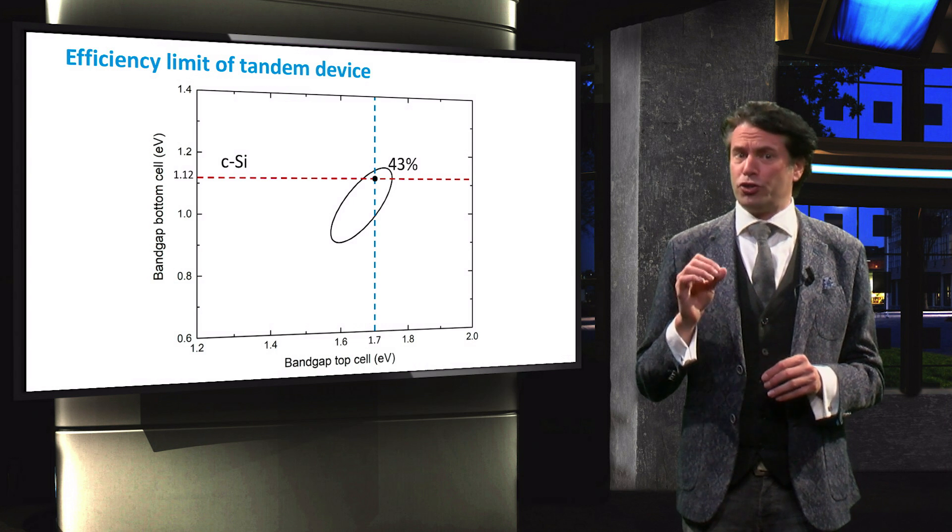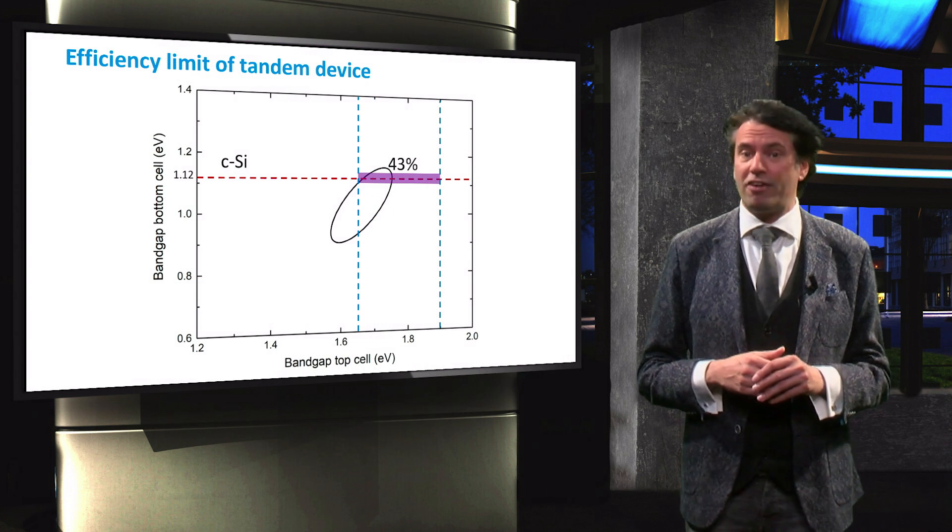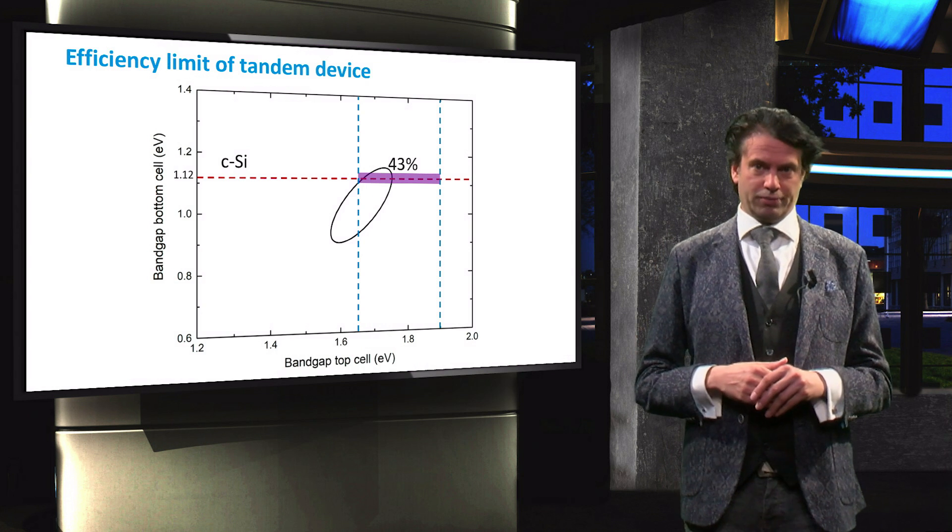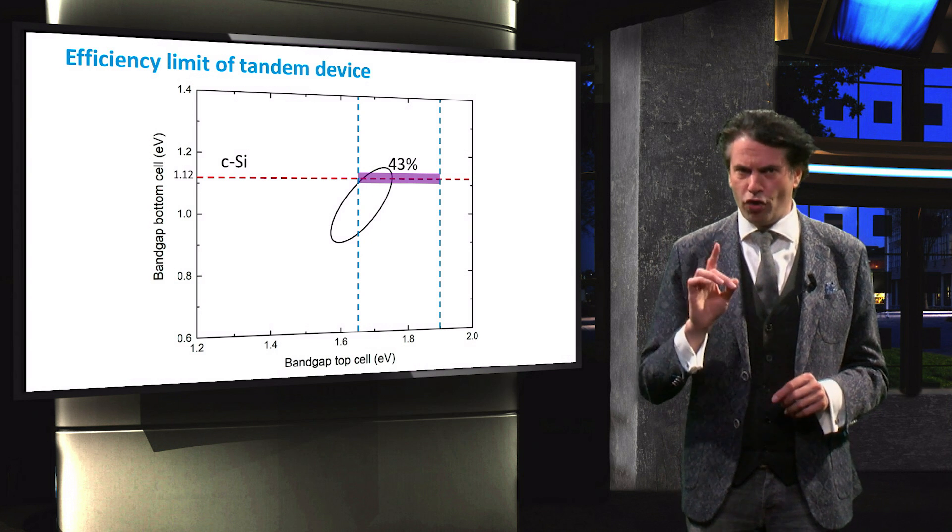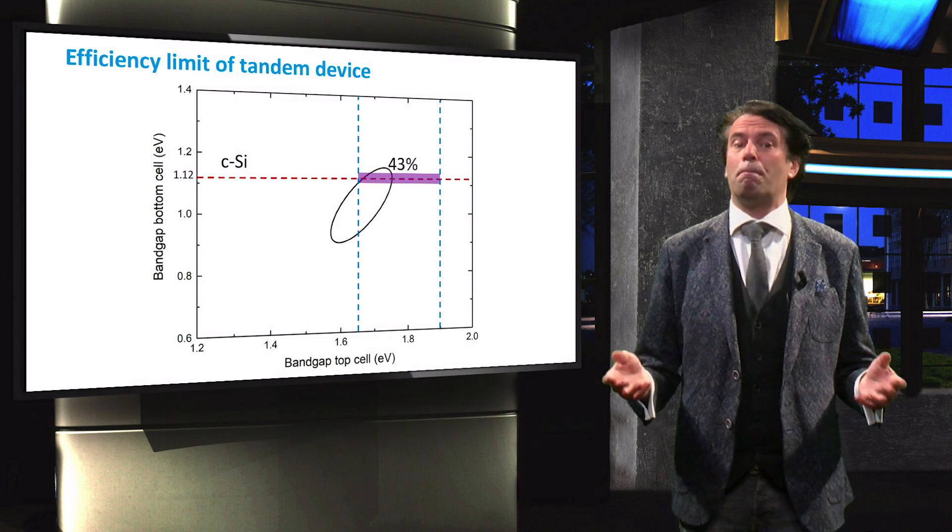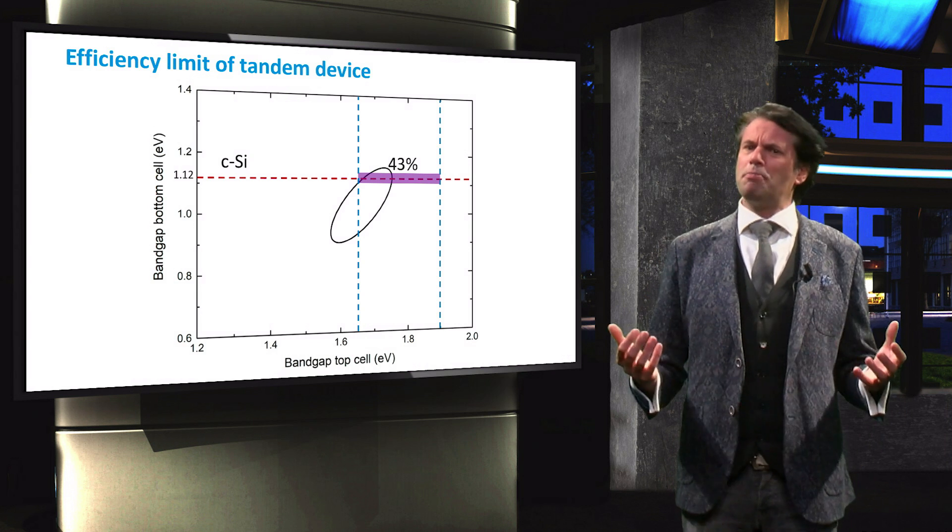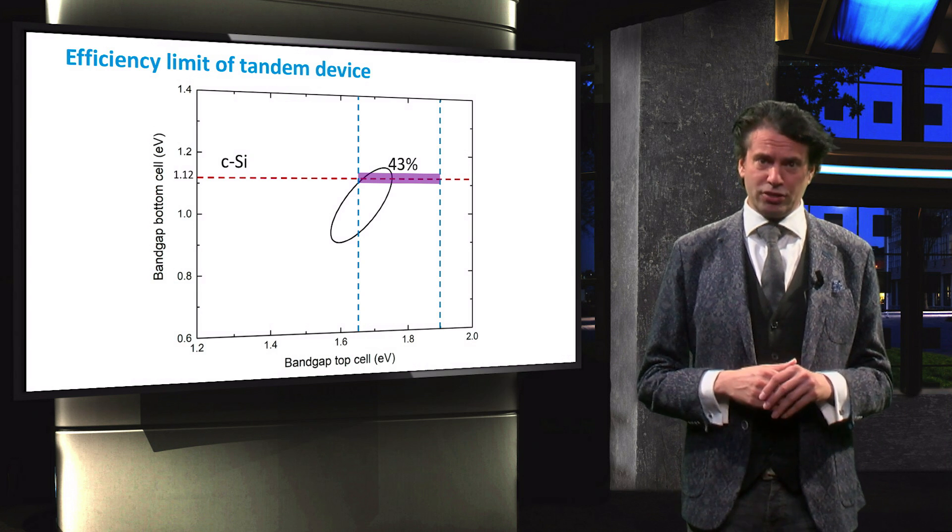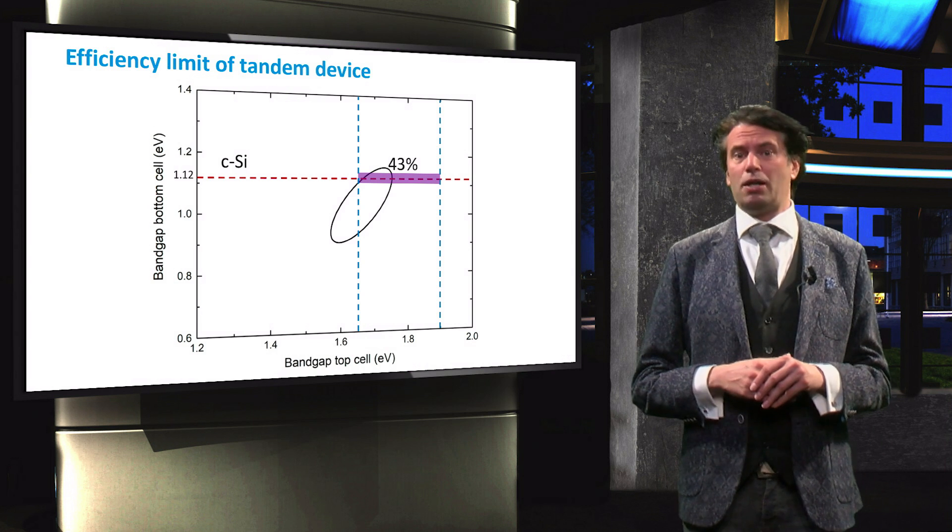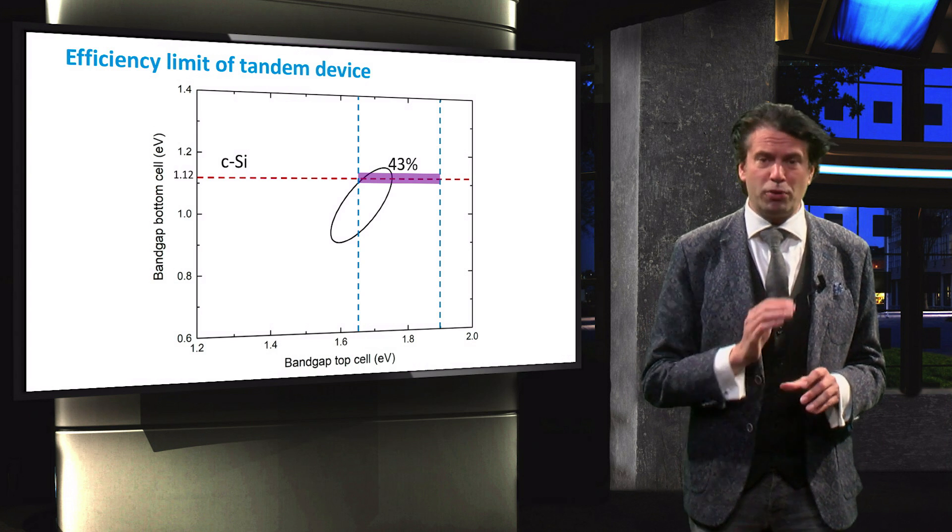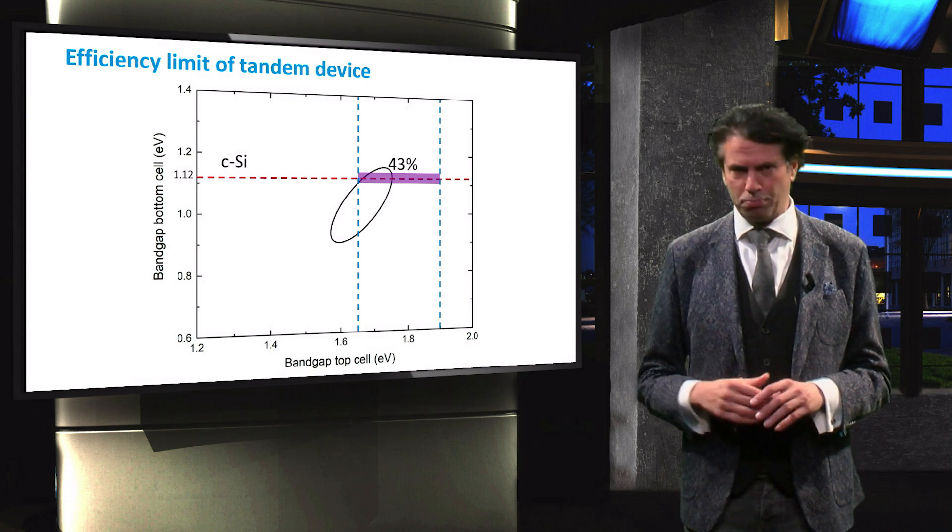However, the four terminal structure is less sensitive to bandgap variations than the two terminal design. So, for a four terminal device with a crystalline silicon bottom cell, the efficiency limit will remain 43% or larger for a top cell bandgap energy ranging from 1.65 eV up to 1.9 eV.